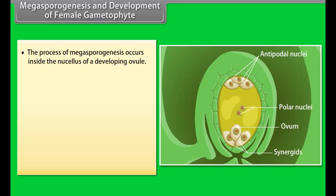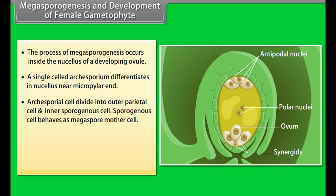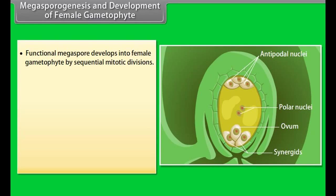Parts of the ovule include the funiculus, hilum, raphe, nucellus, embryo sac, integuments, micropyle, and chalaza. Megasporogenesis occurs inside the nucellus of a developing ovule. A single-celled archesporium differentiates near the micropylar end. The archesporial cell divides into an outer parietal cell and an inner sporogenous cell. The sporogenous cell behaves as the megaspore mother cell, which undergoes meiotic division to form four megaspores, of which three degenerate and one remains functional.